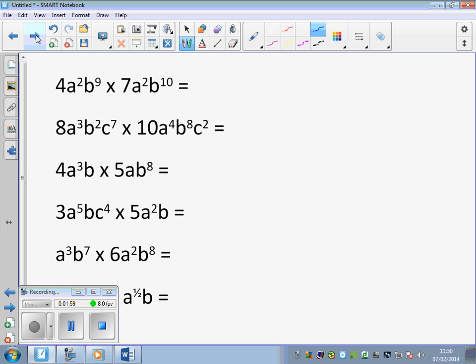In the first one, we multiply our coefficients. 4 multiplied by 7 is 28. When we look at our bases, we have an A squared and another A squared. A to the power of 2, A to the power of 2. We add A to the power of 4. B to the power of 9, B to the power of 10 is B to the power of 19.